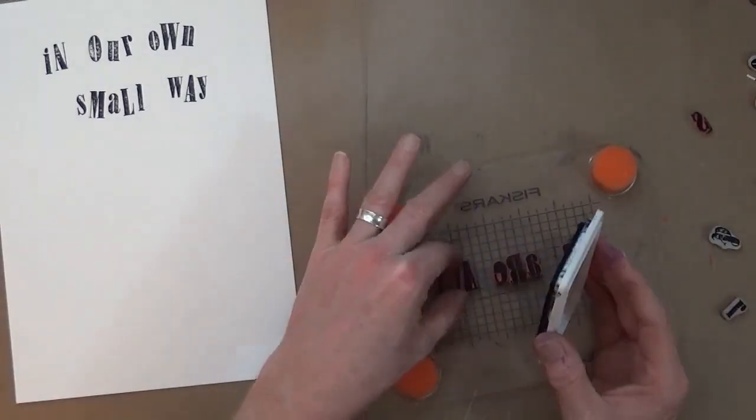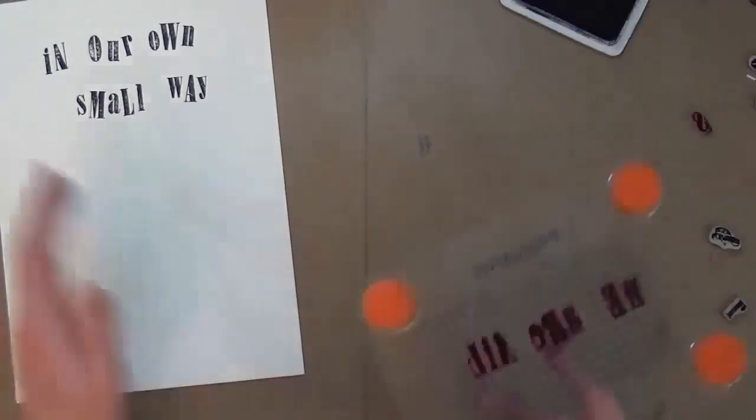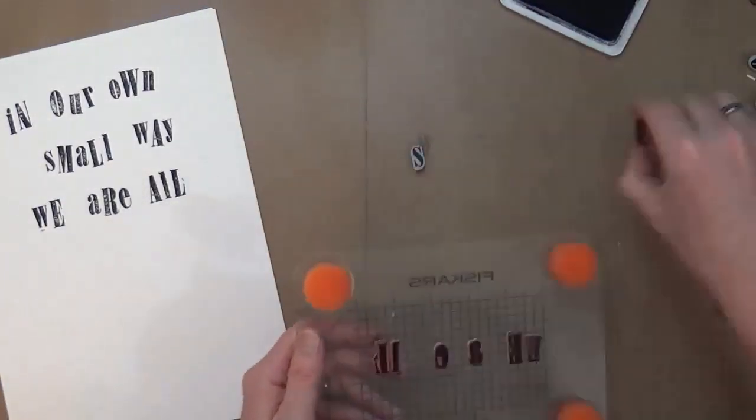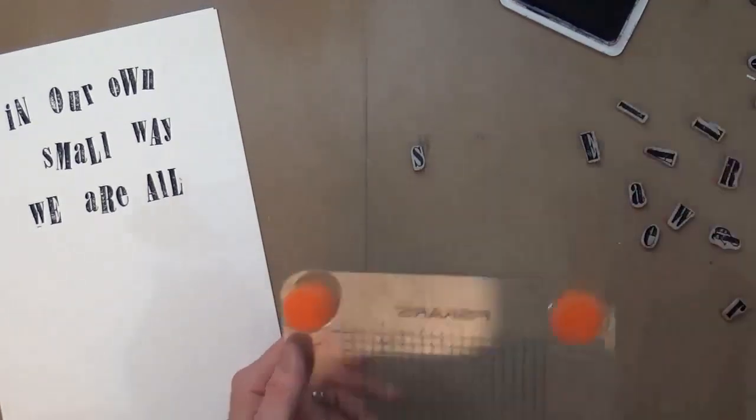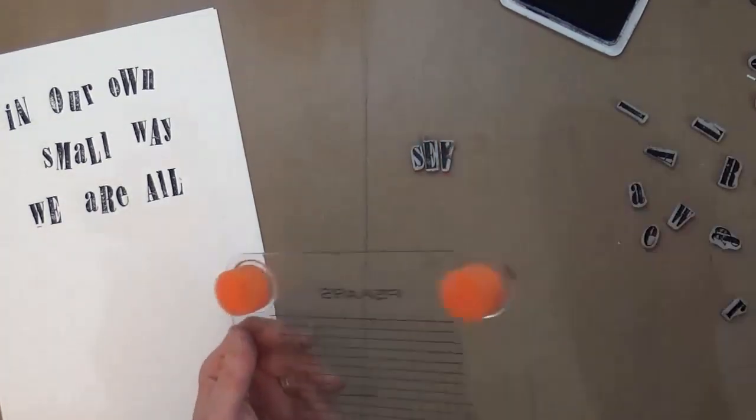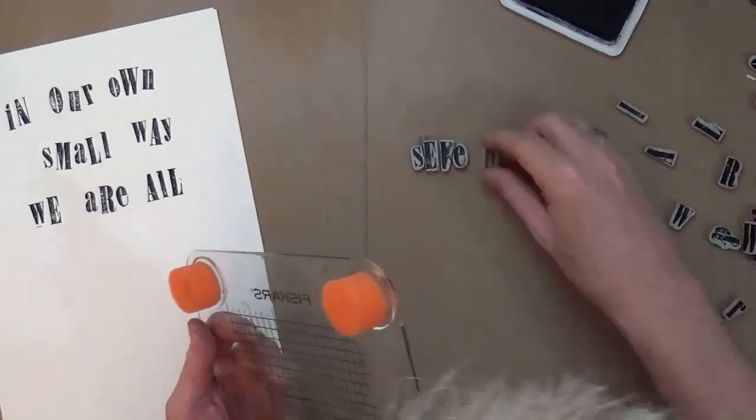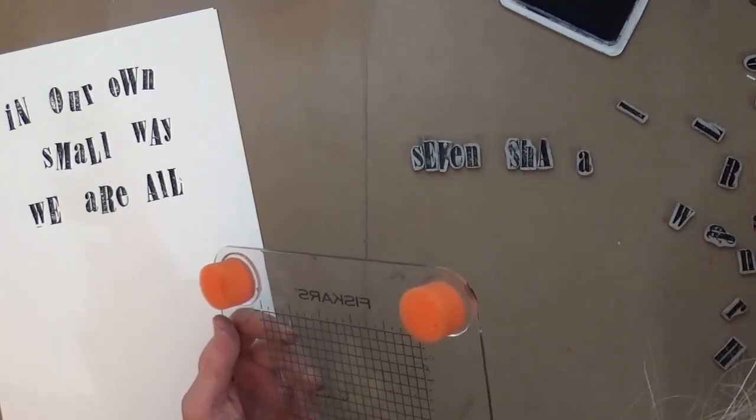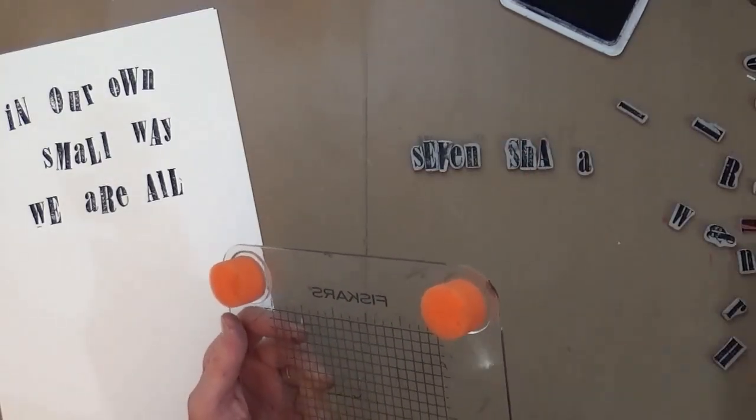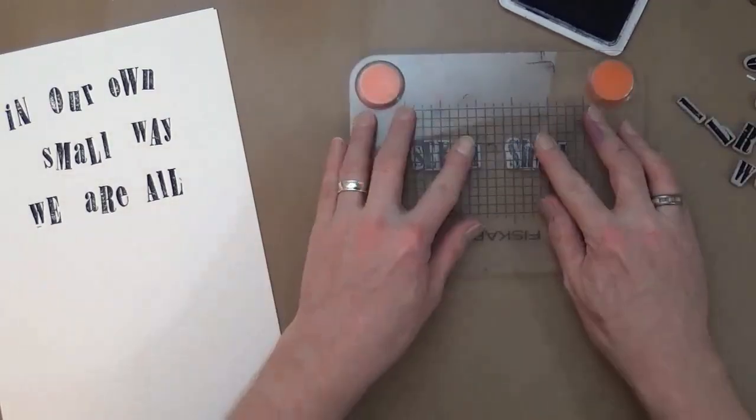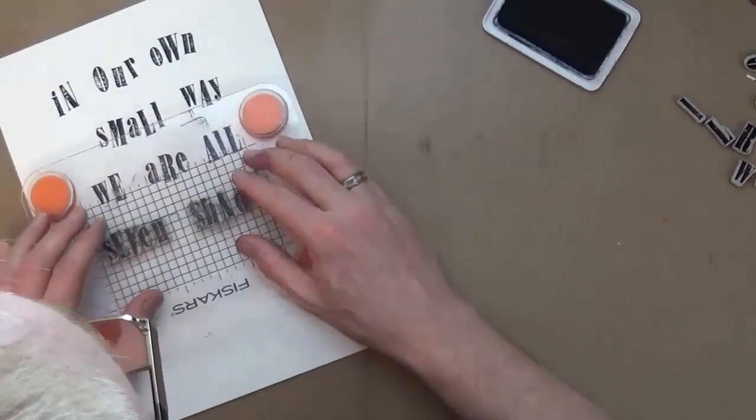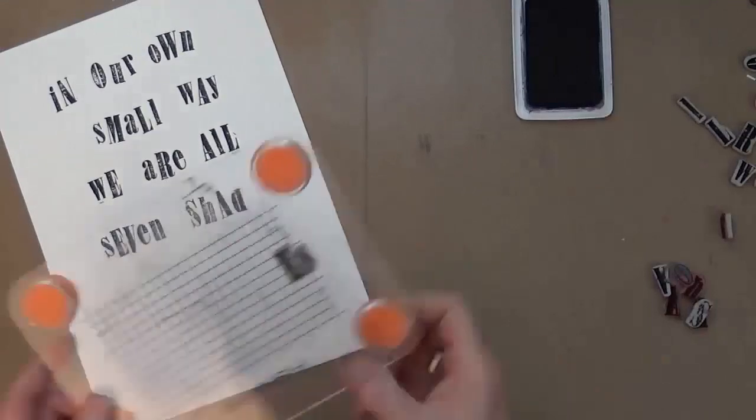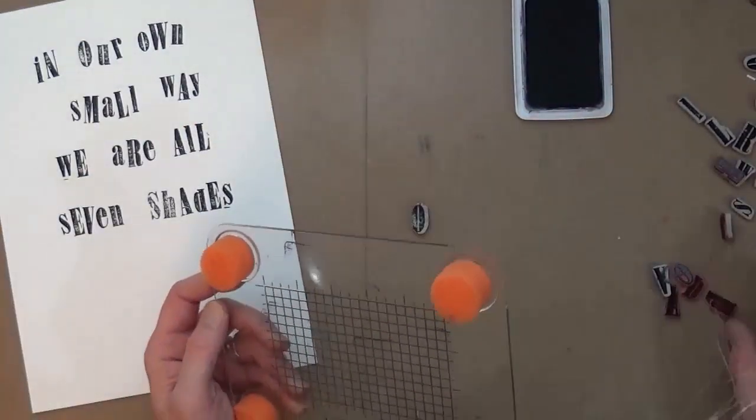So this process of adding or finding all the letters to make up the words that I want to use does take some time. So what I'm going to do is I'm actually going to speed this up now to about four or five times what it should be normally, so we can get to the end because you don't really want to see me sitting there stamping, finding the right letters to spell the right words. So as my hands become a blur, you'll see the words starting to take shape. And when I have finished stamping all the words on, I will cut them out into individual blocks.